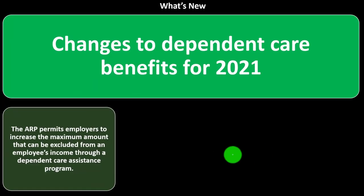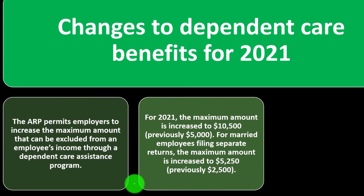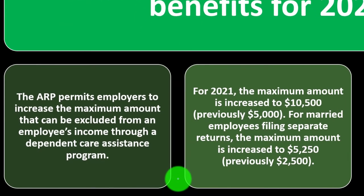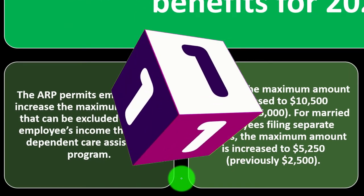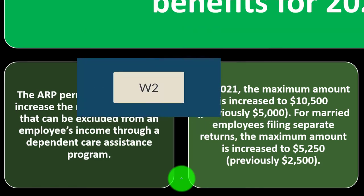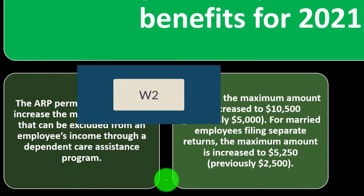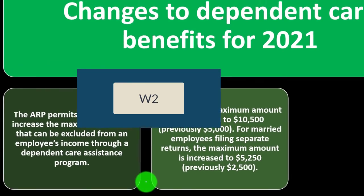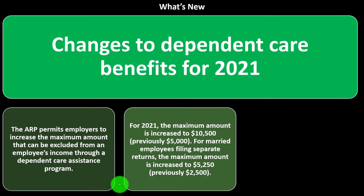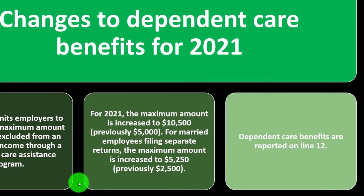For 2021, the maximum amount that can be excluded from box 1 of the W-2 is increased to $10,500 — it was previously only $5,000. For married employees filing separate returns, the maximum amount is increased to $5,250, previously only $2,500.